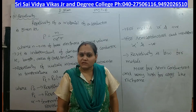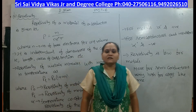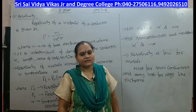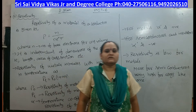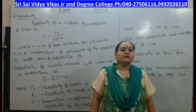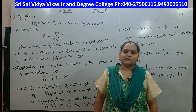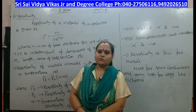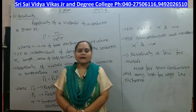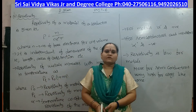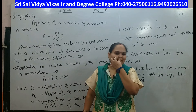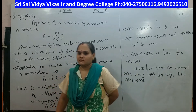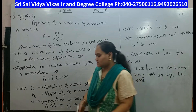What is Ohm's law? At constant temperature, the potential difference applied across the ends of a conductor is directly proportional to the current passing through that conductor — that is, V is proportional to I. This implies V equal to IR, where R is the electrical resistance.